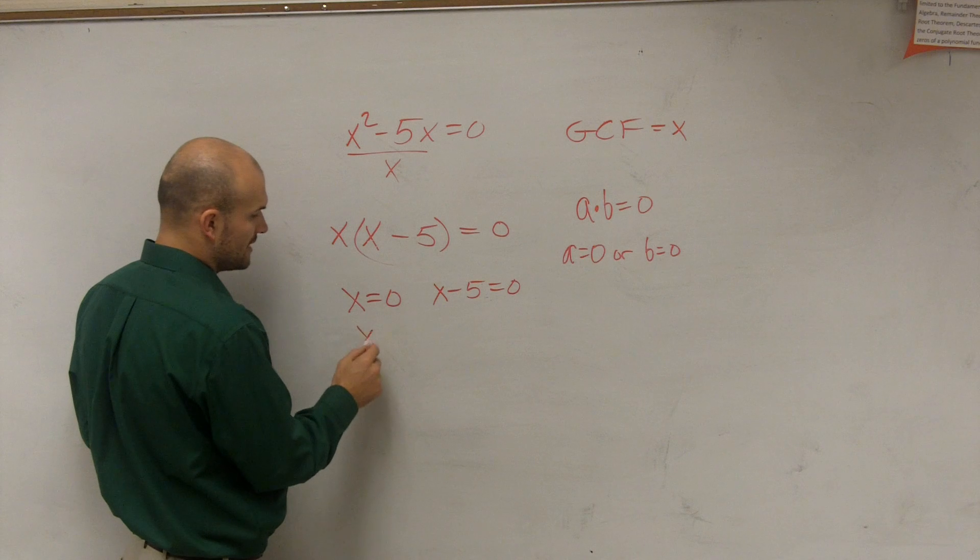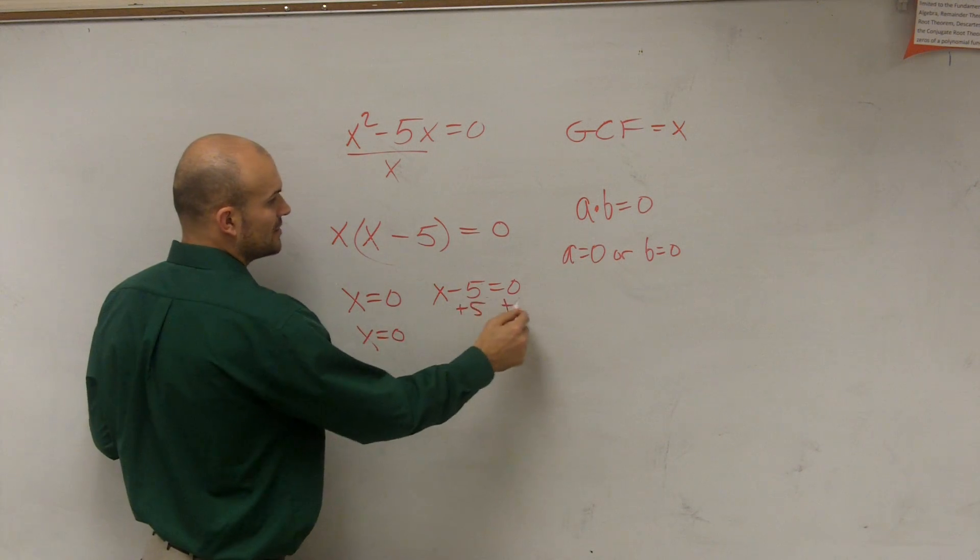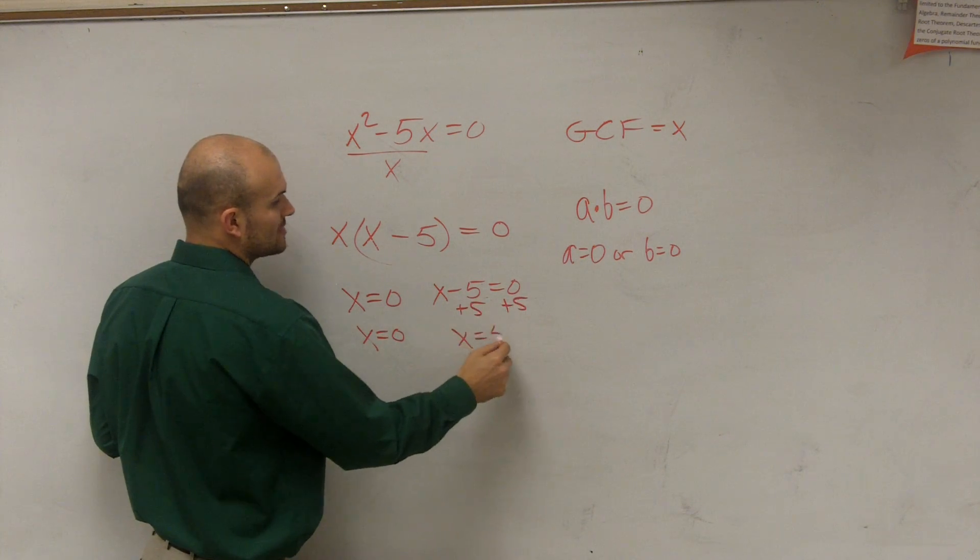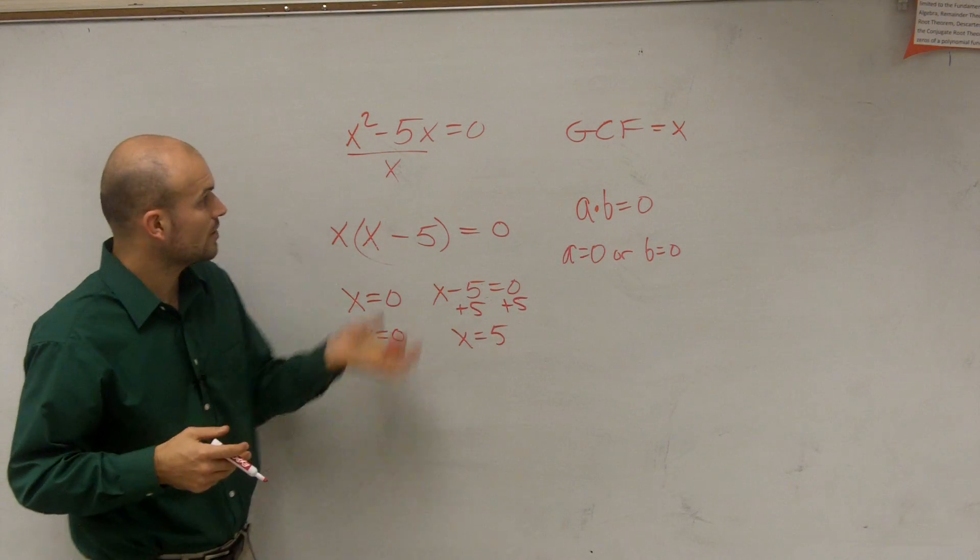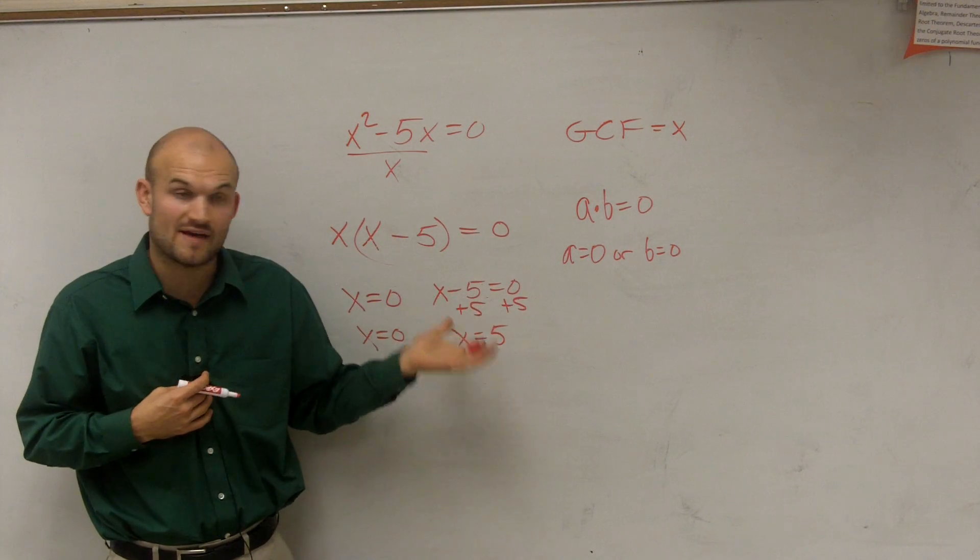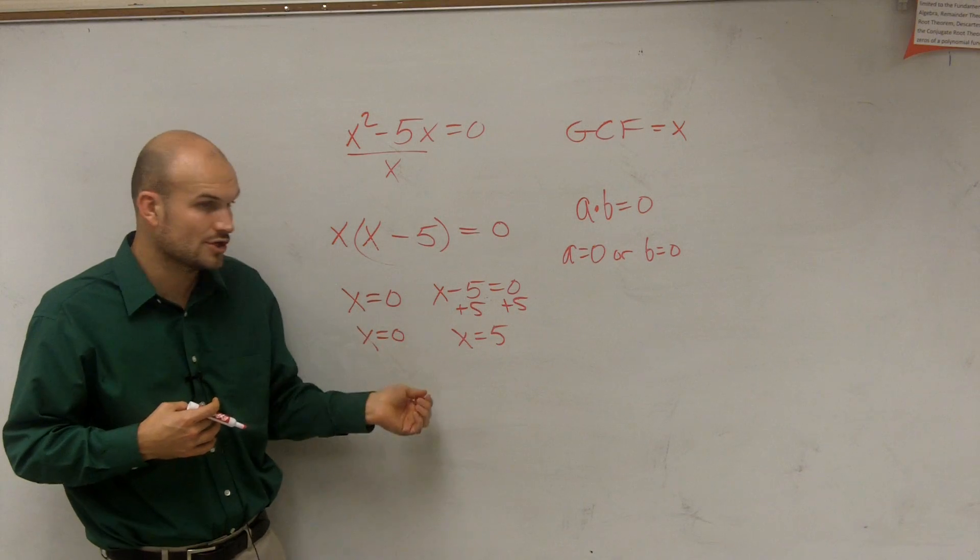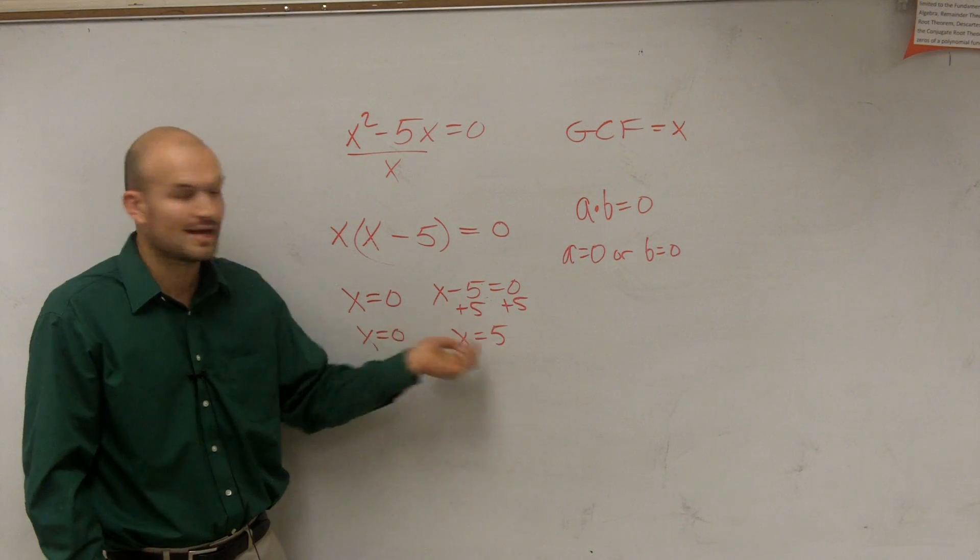Therefore, when solving, I get x equals 0, add 5 to the other side, and I get x equals a positive 5. Therefore, the solution for x, the value of x that makes both these equations true, is x equals 0 and x equals 5.